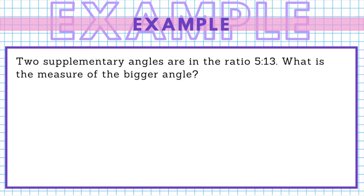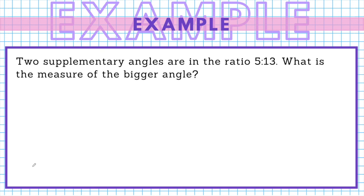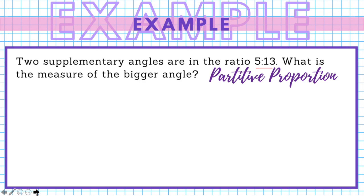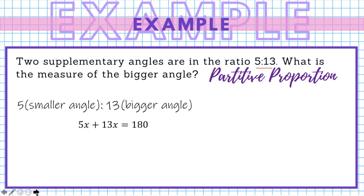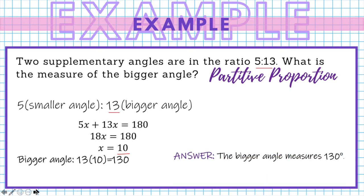Two supplementary angles are in the ratio 5 to 13. What is the measure of the bigger angle? Supplementary angles sum to 180 degrees. Since 180 degrees is divided into two portions in the ratio 5 to 13, this is a partitive proportion. We solve: 5x plus 13x equals 180, so 18x equals 180, giving x equals 10. The bigger angle equals 13 times 10 equals 130 degrees.